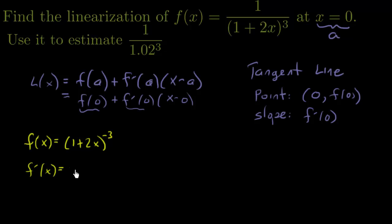It's just going to be the chain rule. We bring down negative 3, rewrite the inside, subtract 1 off the exponent, then multiply by the derivative of the inside, which is 2.